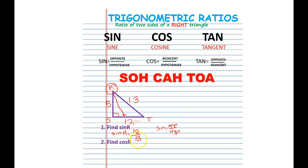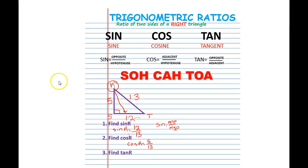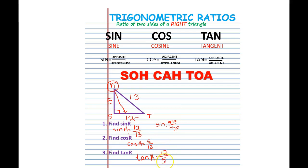Next we have to find the cosine of R. Cosine is adjacent over hypotenuse. So the cosine of R: the adjacent is 5 and the hypotenuse is 13, so cosine of R is 5 over 13. Next, find the tangent of R — it is opposite over adjacent. The opposite from R is 12 and the adjacent is 5, so tangent of R is 12 over 5.